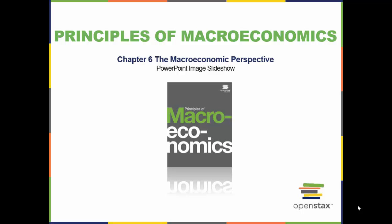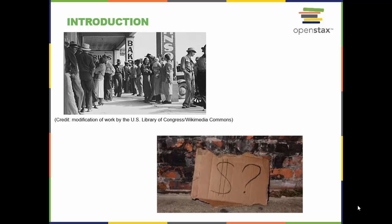Welcome to the lecture video for chapter six in macroeconomics, Econ 202. We will talk about the macroeconomic perspective. At times, such as when people are in need of government assistance, it is easy to tell how the economy is doing. This photograph in the upper left-hand corner shows people lined up during the Great Depression waiting for relief checks. At other times, when some are doing well and others are not, it is more difficult to figure out how the economy of a country is doing.